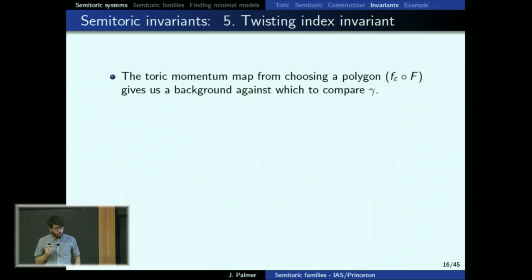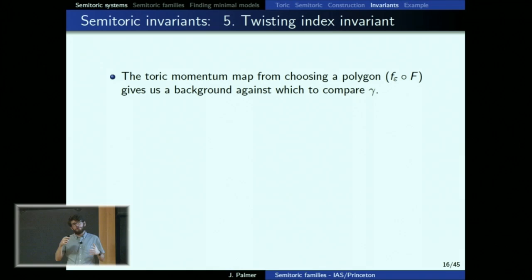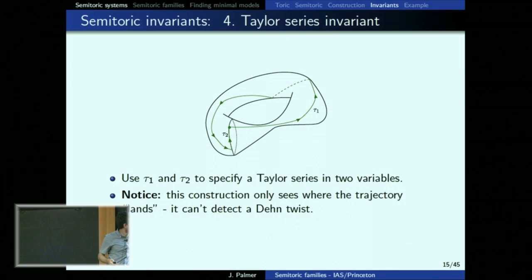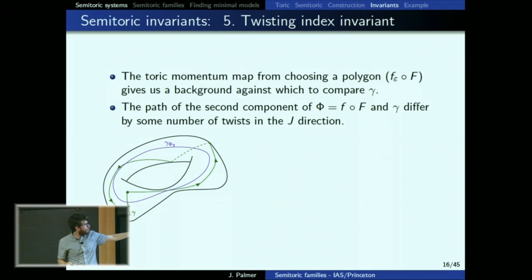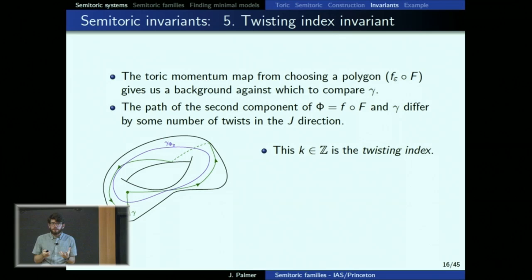The twisting index: as soon as you choose a polygon and make the cuts, away from the cuts you have a toric momentum map whose flow components define a cycle on nearby tori. Call this cycle gamma. You can compare that cycle against the background toric cycle. Given this polygon, you can ask how the dynamics around the focus-focus point twist around the torus, and this gives an integer — the twisting index.